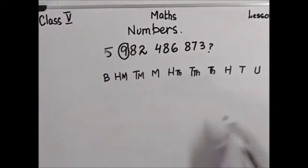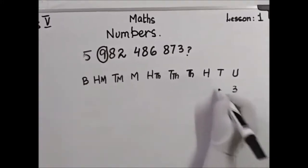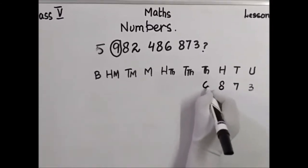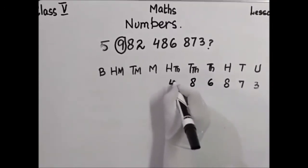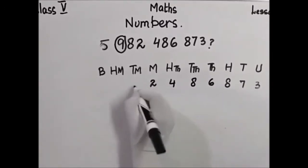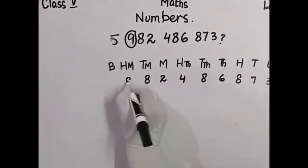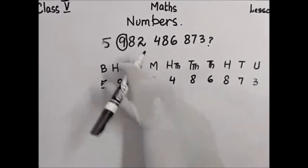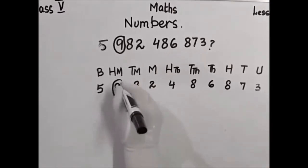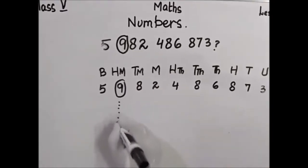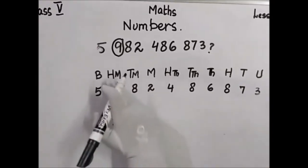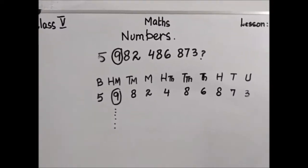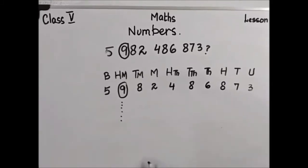We place the digits 3, 7, 8, 6, 8, 4, 2, 8, 9, and 5 in the chart. The ring digit is 9. How do we know the value of 9? It is 100,000,000. The value of 9 is 100,000,000.